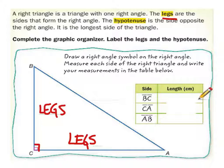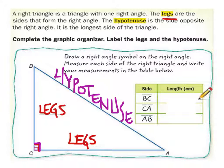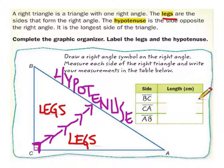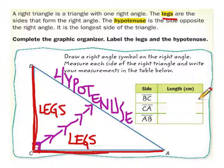The hypotenuse is always opposite from that right angle — so this right here is the hypotenuse. You can look at the right angle and notice it always points in the direction of the hypotenuse. The two sides that make up the right angle are the legs, so see how this right angle is connected to this side and this one — that means they are legs.